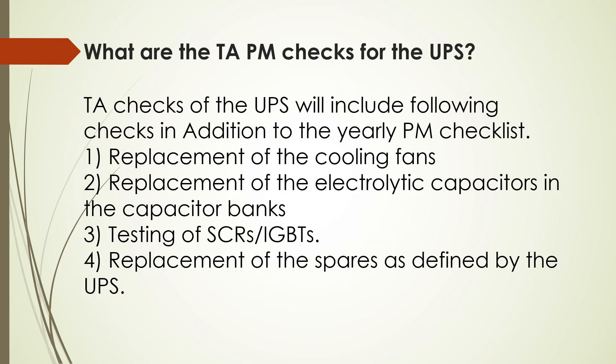What are the TA PM checks for the UPS? TA checks of UPS will include the following checks in addition to the yearly PM checklist actions: replacement of cooling fans, replacement of electrolytic capacitors in the capacitor banks, and testing of SCRs or IGBTs with replacement of these parts as defined by the UPS manufacturer based on their lifetimes.